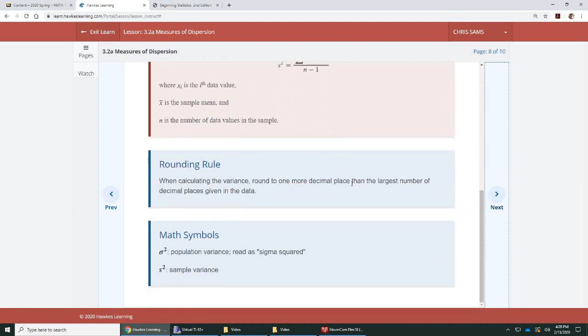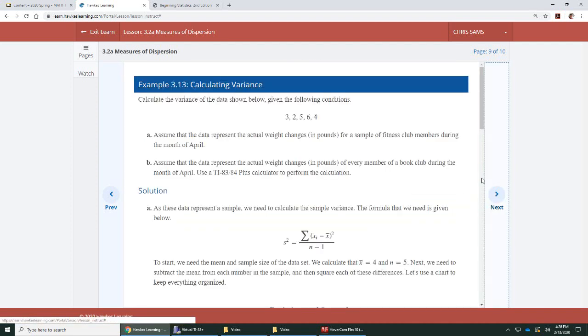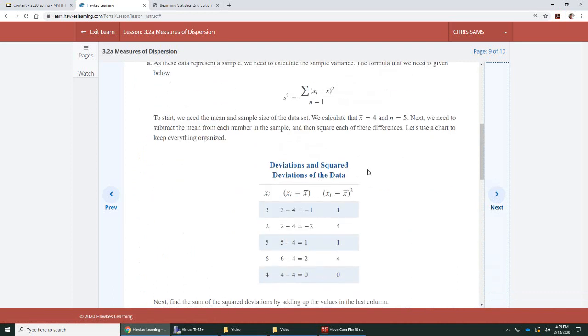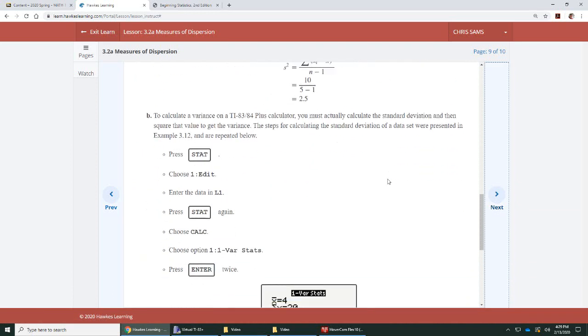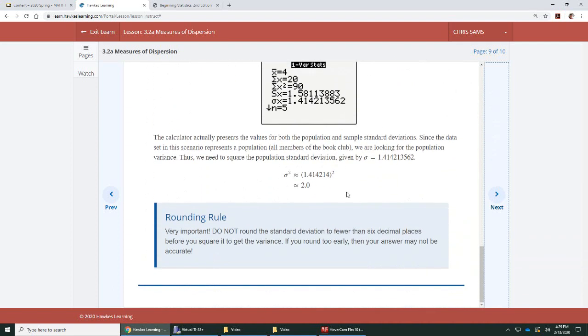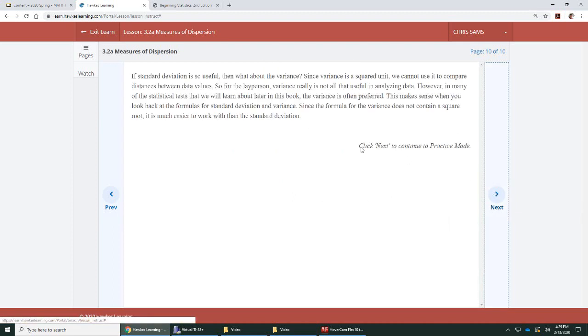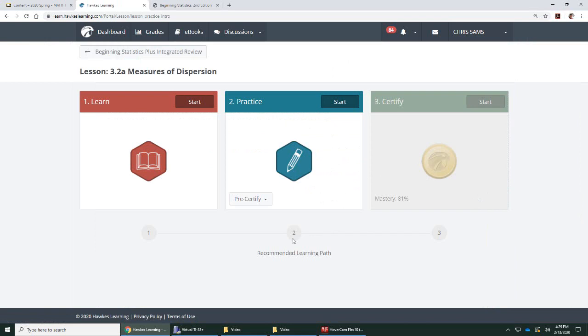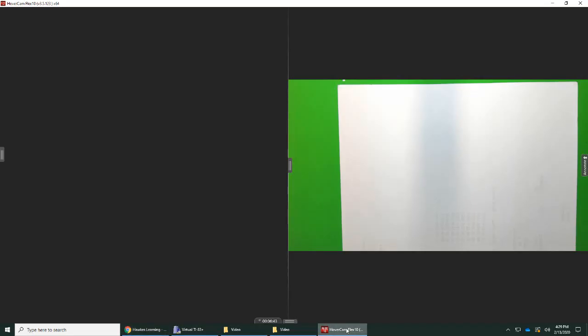Rounding rule is always one more decimal place than your original data. I'm not sure if the book shows you how to get the variance. What they tell you to do is type out the standard deviation to about six places and then square it. I'm going to show you how to recall it from the calculator. And this is it. Let's go over to Hawks and we'll start some problems.